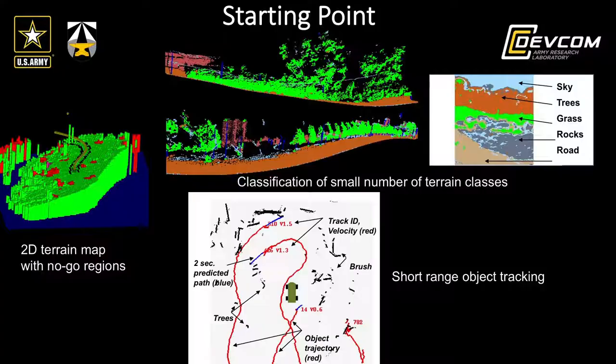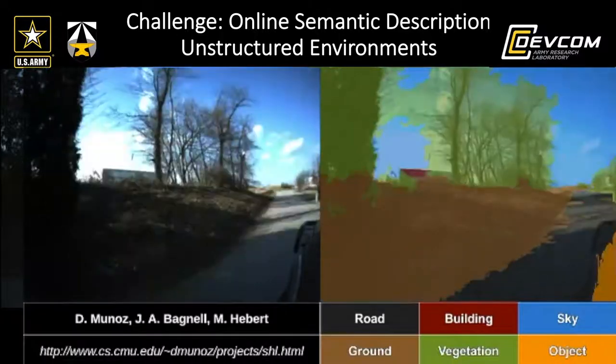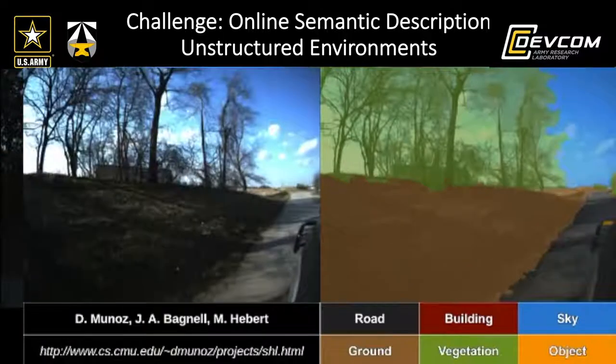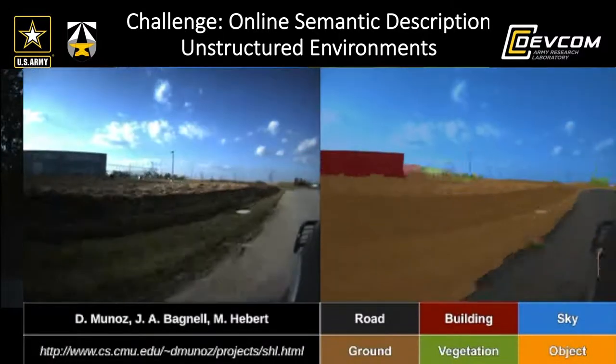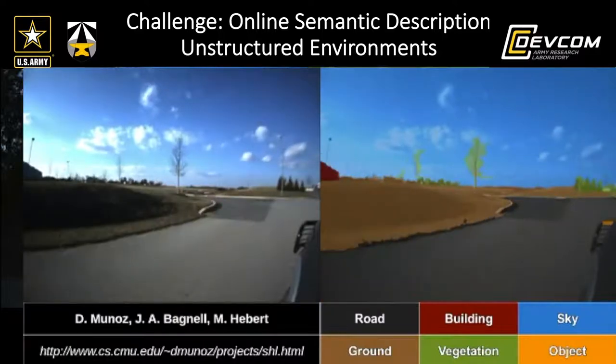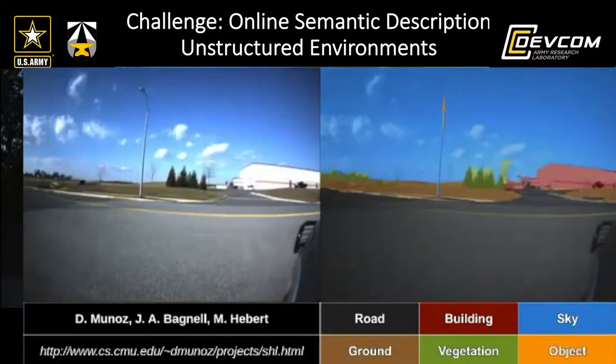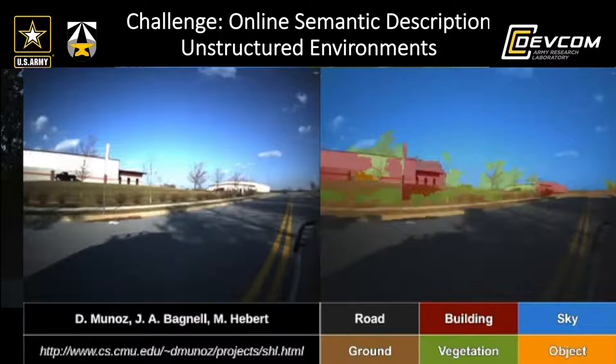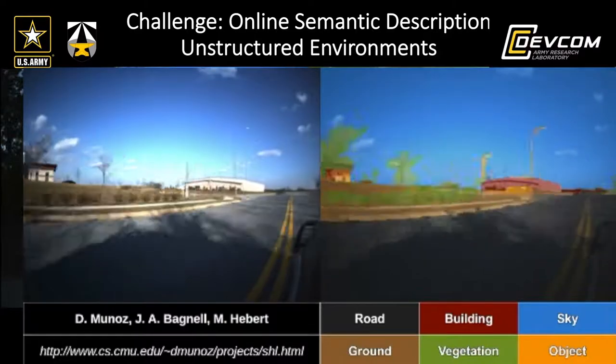An essential capability of autonomous systems is the ability to perceive the environment — that is, to build an internal representation of it. Where did we start in this area 10 years ago? We were able to detect go and no-go zones, essentially doing obstacle detection. We were able to identify a few classes of terrain and track objects in the environment of the robot.